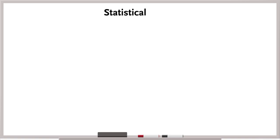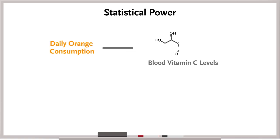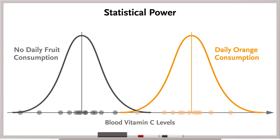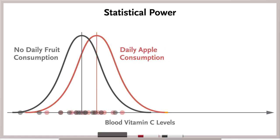Third, we have to think about statistical power, which is the probability of finding an effect if there is one to be found. For example, daily orange consumption is known to increase vitamin C levels. If the difference in vitamin C levels between orange eaters and non-orange eaters is large, this effect can be detected even with a small sample size. But if the effect is small, there could be too few participants to meaningfully detect the difference, therefore leading to a higher probability of a false negative, or type 2 error. A similarly underpowered analysis for daily apple consumption and overall health could suffer from the same error.